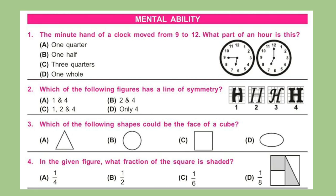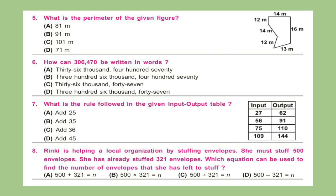Question 4: In the given figure, what fraction of the square is shaded? Question 5: What is the perimeter of the given figure? Question 6: How can 3,6,470 be written in words?